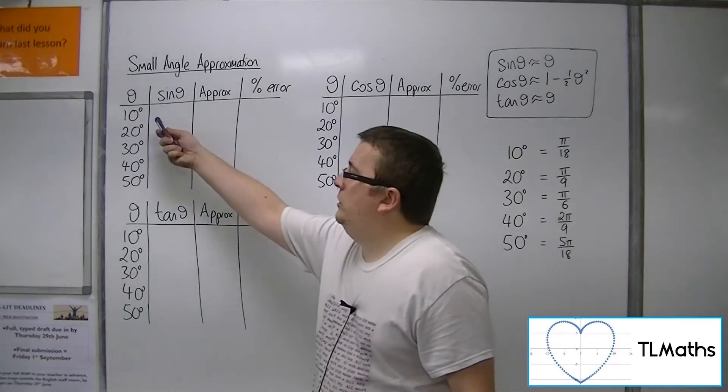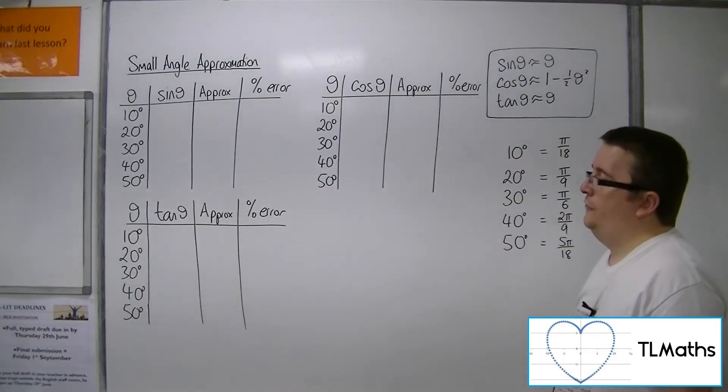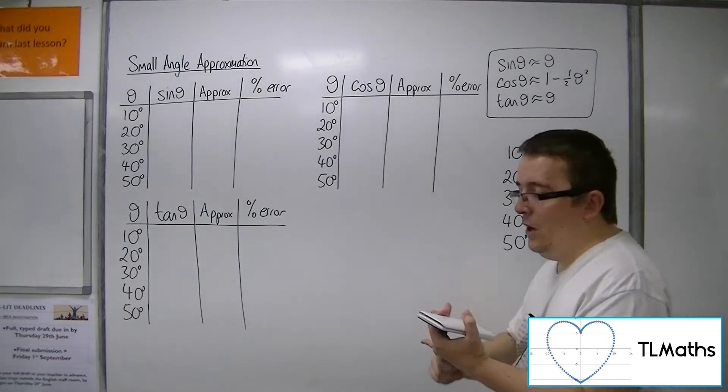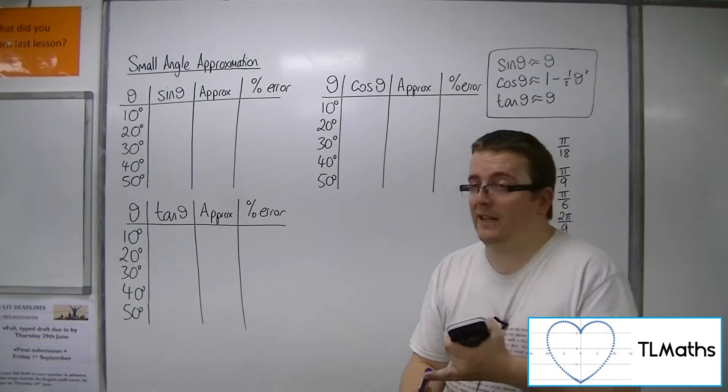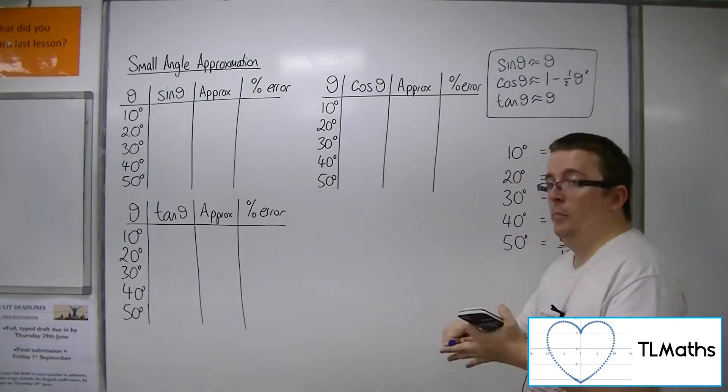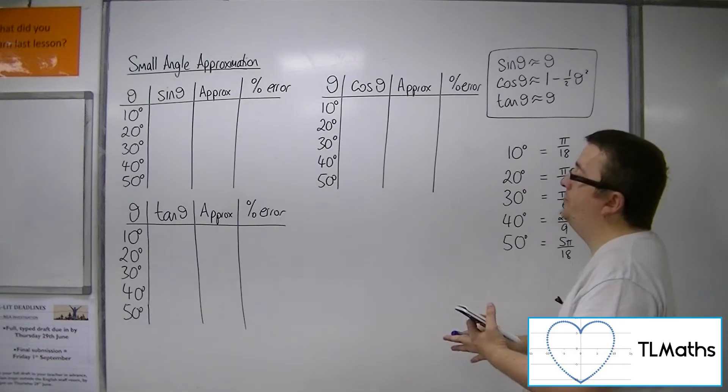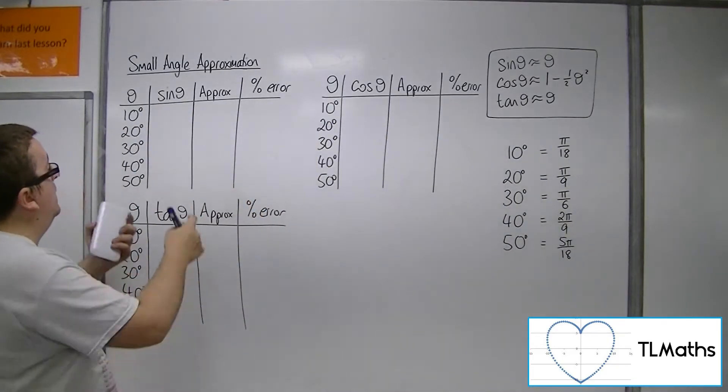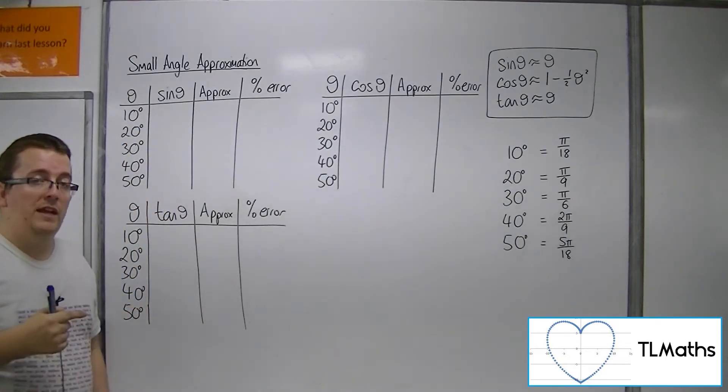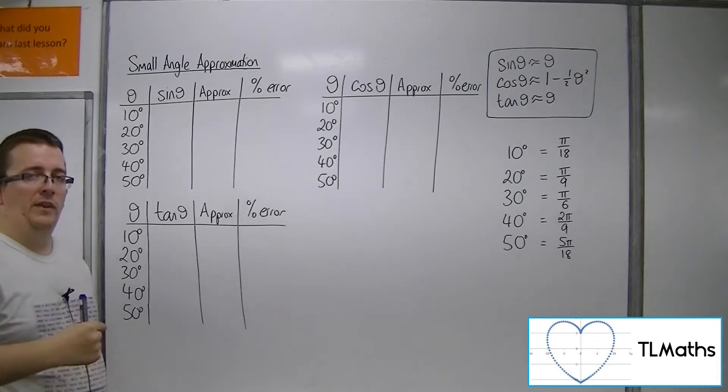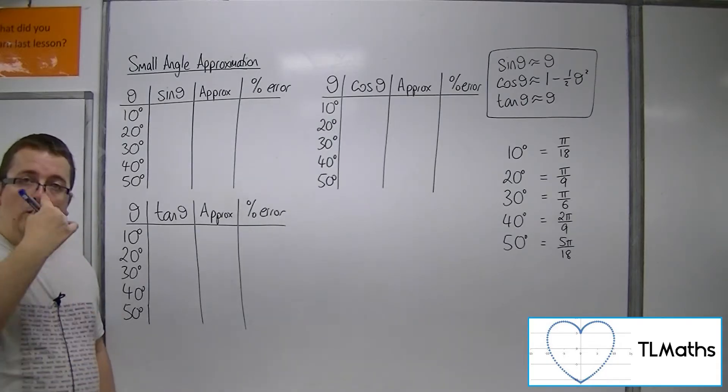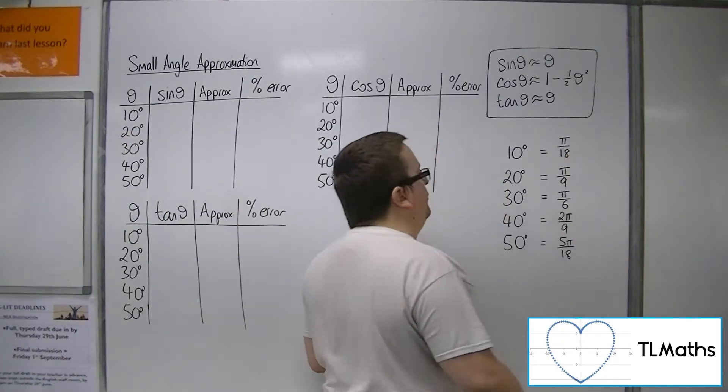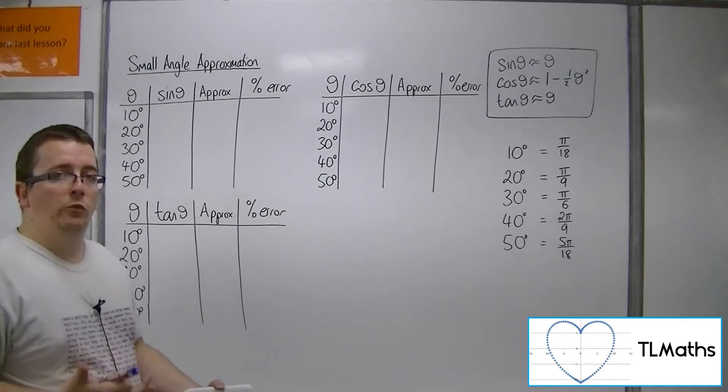So I've decided that we should look at the angles between 10 and 50 degrees for sine, cos, and tan. We're going to see what the calculator gives us, what the approximation gives us, and then the percentage error between the two. I've put them into degrees down the left-hand side because it's easier to understand, but I'm going to actually be working with the angles in radians, because that's how my approximations work.